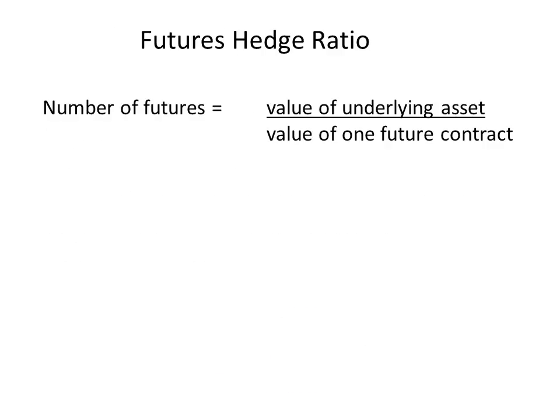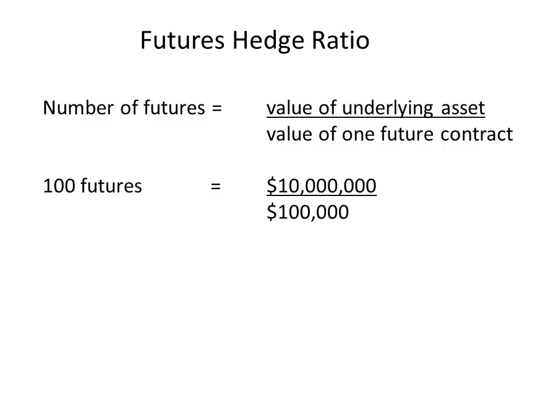The simple hedge ratio is the value of the underlying asset divided by the value of one futures contract. For example, suppose we wish to hedge 10 million nominal worth of government bonds. If the value of one futures contract is based upon 100,000 nominal bonds, then the hedge ratio is 100 futures contracts. We could also use this formula to work out the hedge ratio for, say, 10 million worth of a particular commodity, assuming the value of the futures contract is 100,000 nominal.